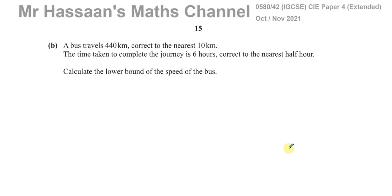Welcome back. This is Mr. Hassan's Maths Channel. This question is part B of question 8 from the October-November 2021 IGCSE Cambridge 0580 syllabus, paper 4 variant 2, and this question is about upper and lower bounds.